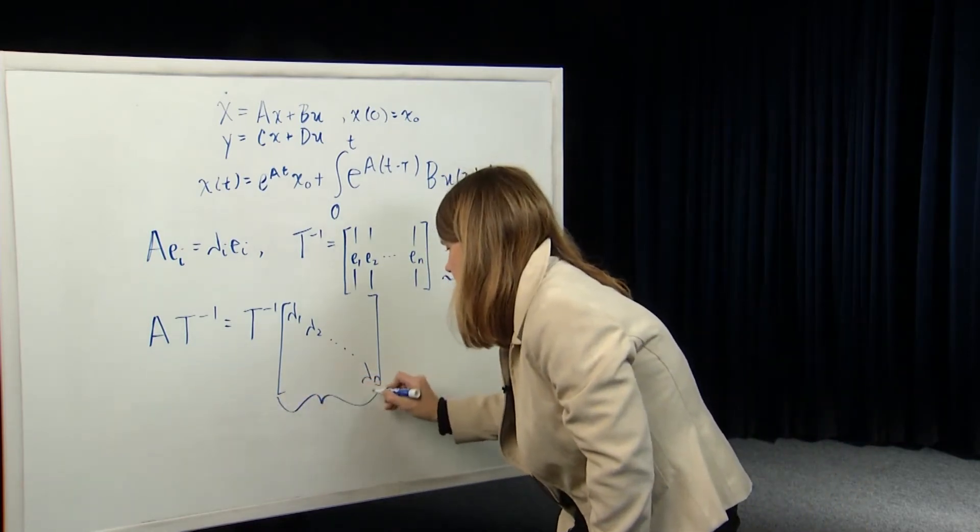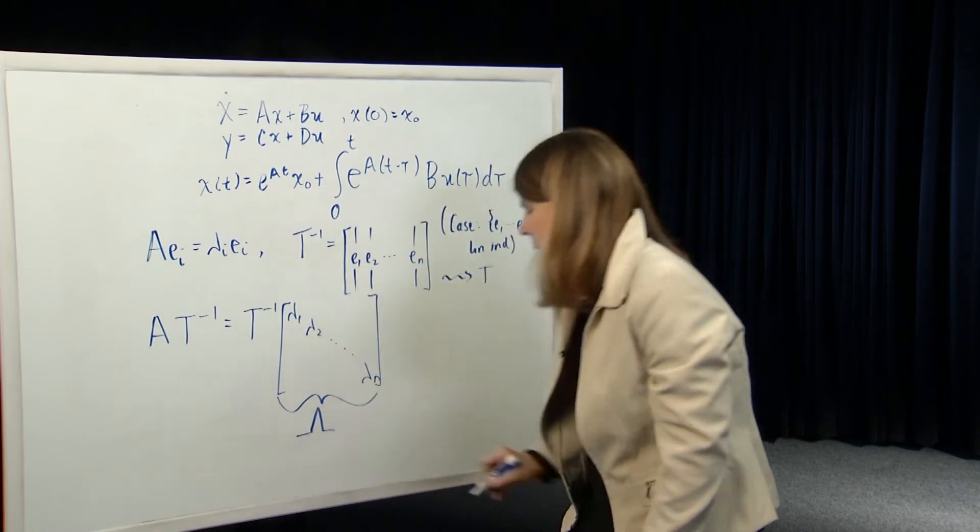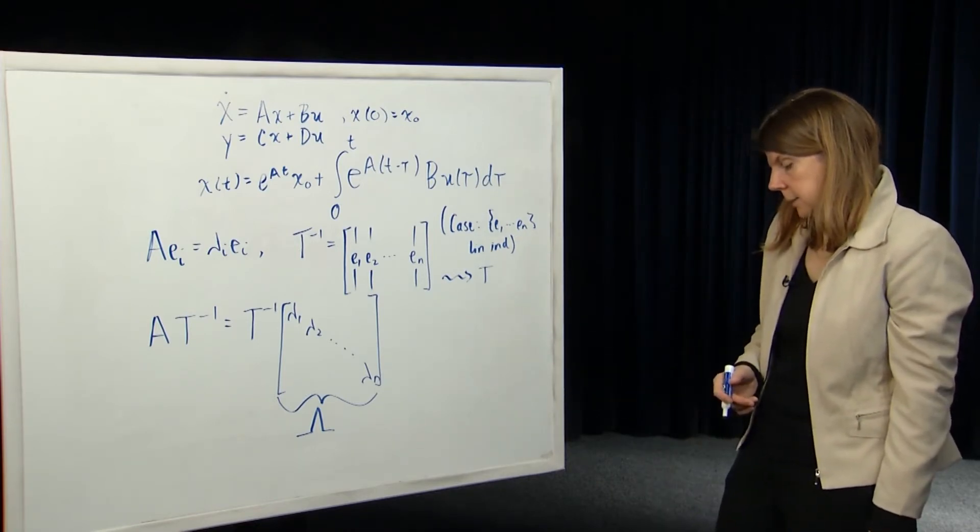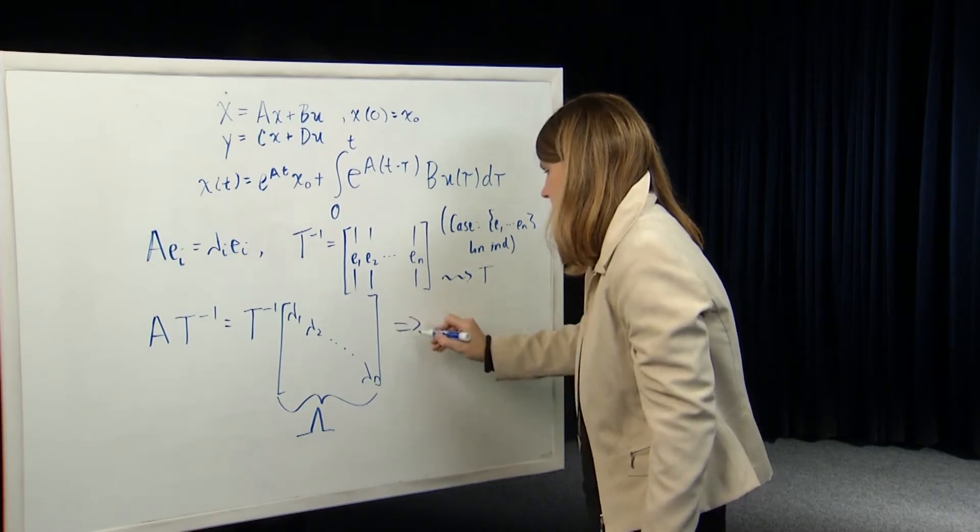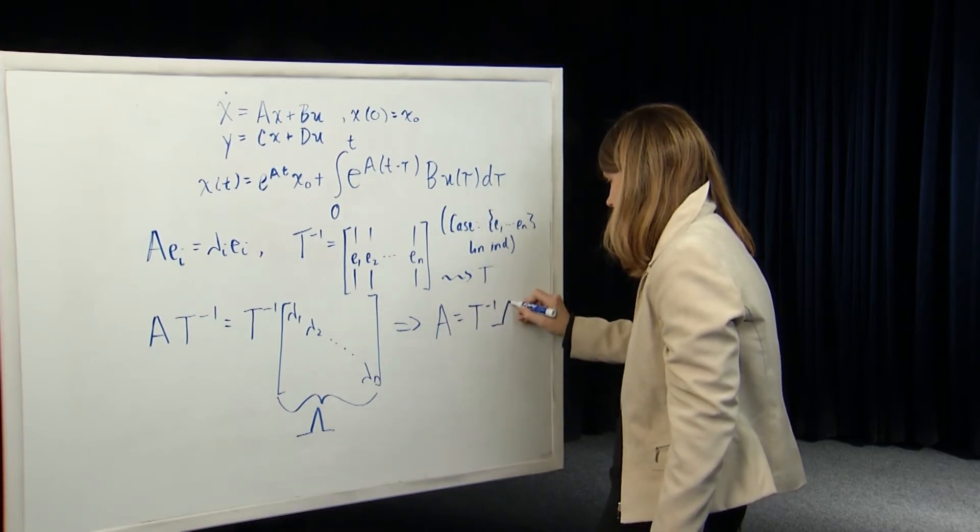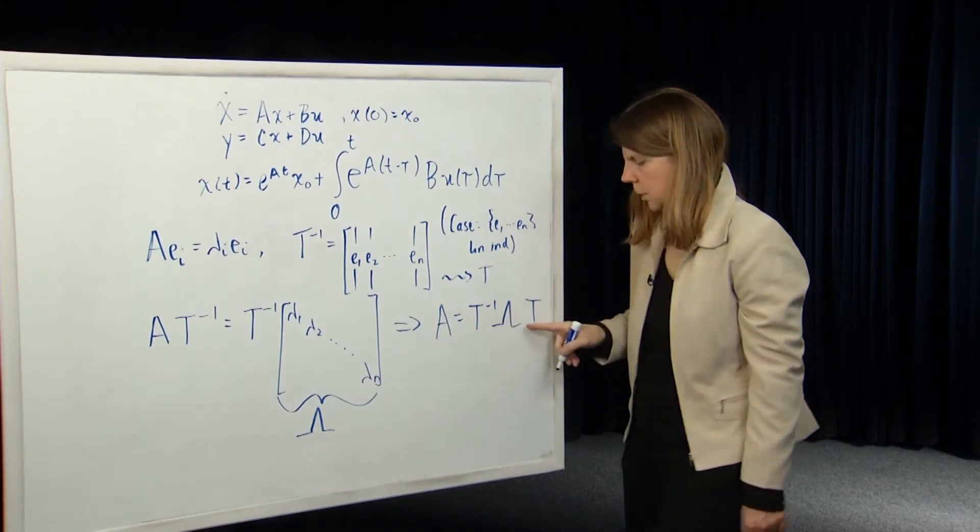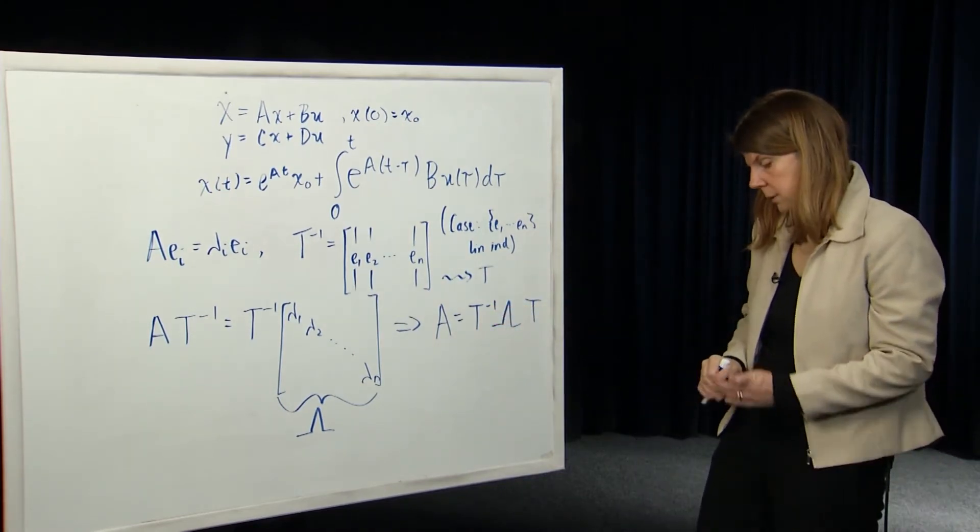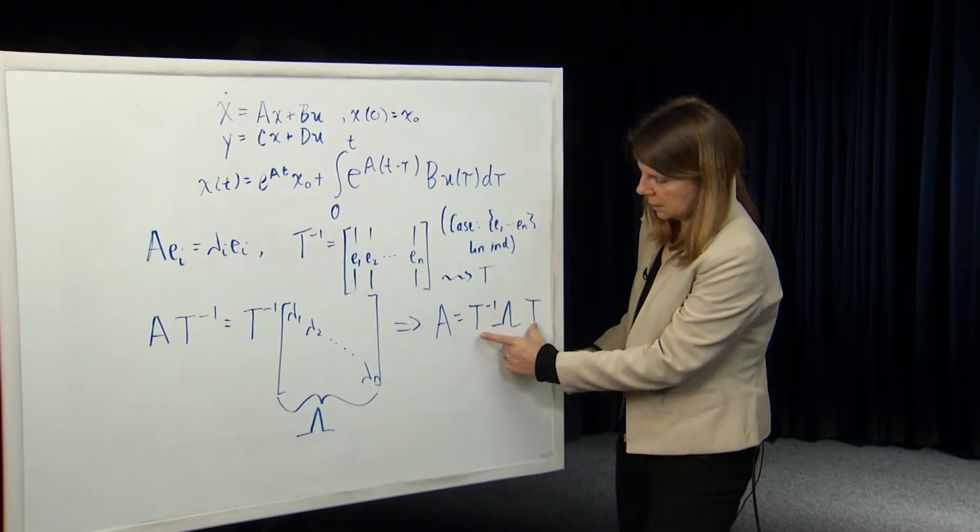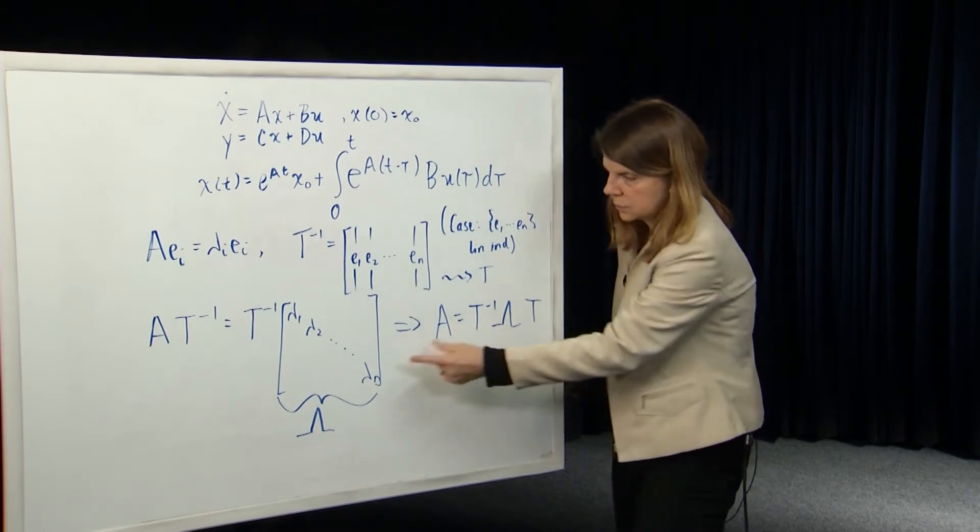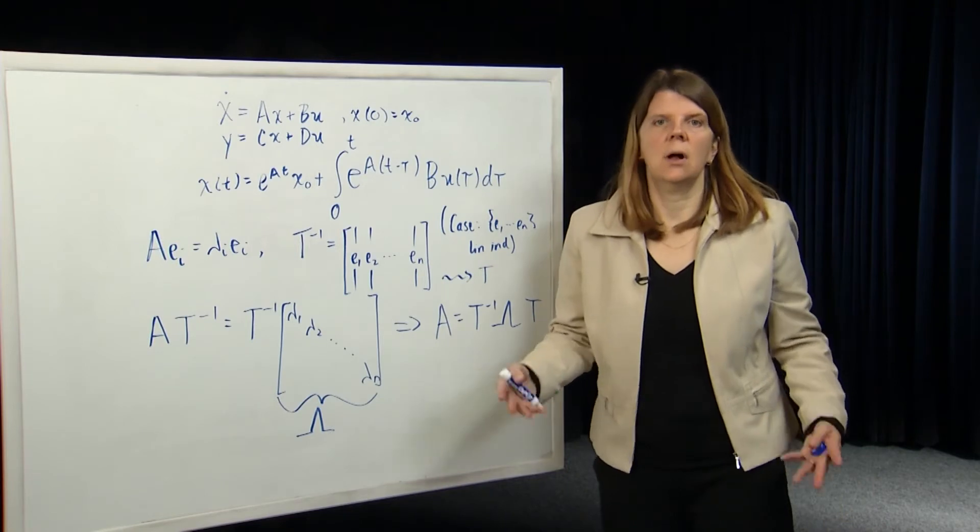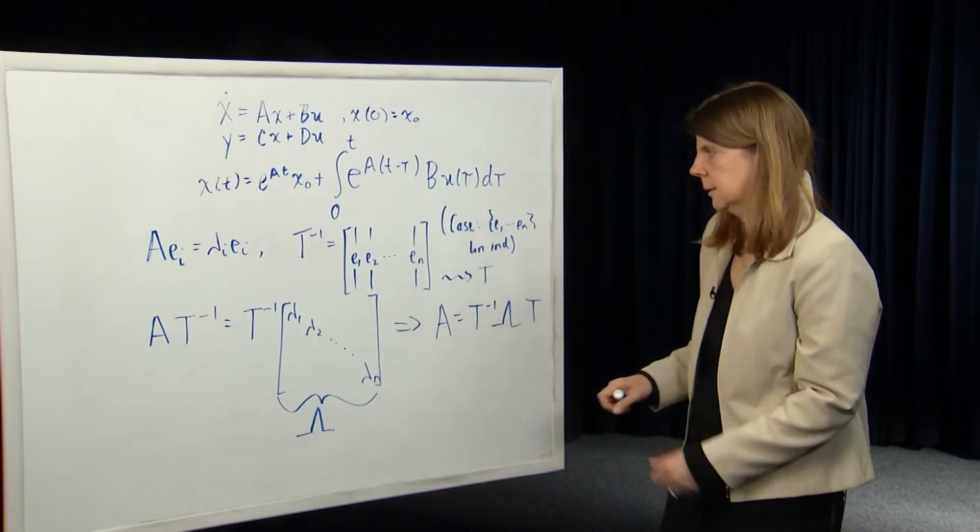Let's call this matrix, it's a diagonal matrix. Let's call it capital lambda. So that's our notation for a diagonal matrix whose diagonal entries are the eigenvalues lambda i. And then we can see from that, and the fact that T is invertible, that the matrix A can be written as T inverse lambda T. So this is called a similarity transform on the matrix A. There exists a transformation T which takes us from A to this diagonal form. And so this particular similarity transform is called a diagonalization of the matrix A.